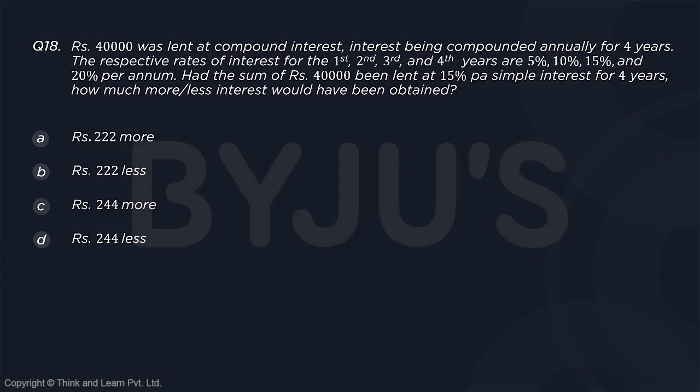40,000 was lent at compound interest, interest being compounded annually for 4 years. The respective rates of interest for 1st, 2nd, 3rd, 4th years are 5%, 10%, 15% and 20%. Had the sum of 40,000 been lent at 15% per annum simple interest for 4 years, how much more or less interest would have been obtained?